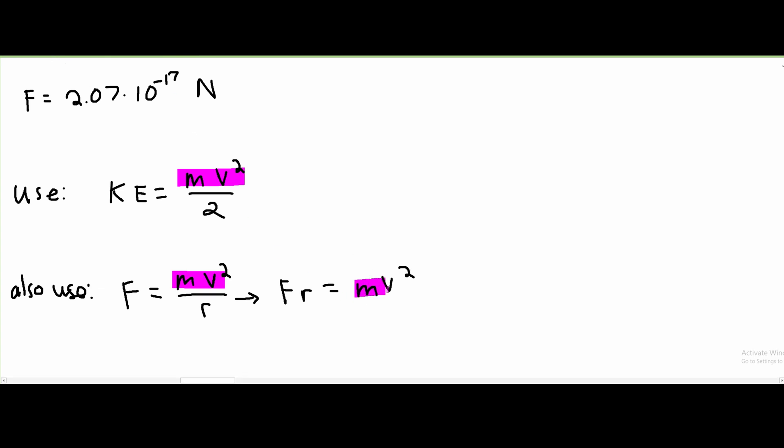We can highlight this again and basically just plug this into our kinetic energy formula. So plugging this in and rewriting this out, we're going to get that KE equals the force times the radius over 2.